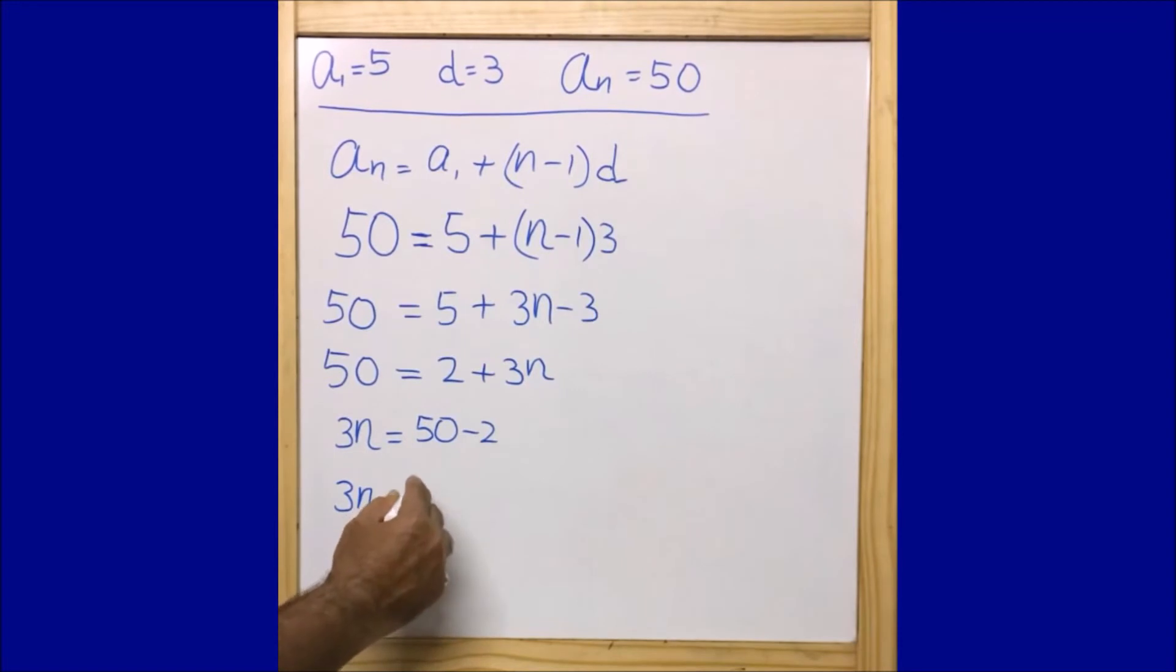3n equals 48, or n equals 48 by 3, that equals 16. Therefore, the value of n equals 16.